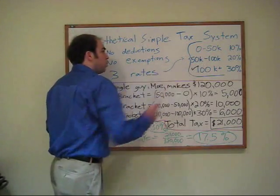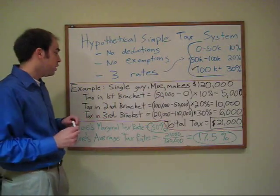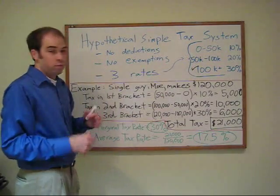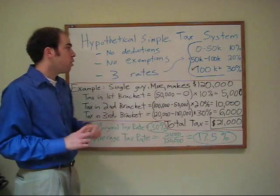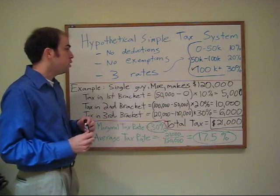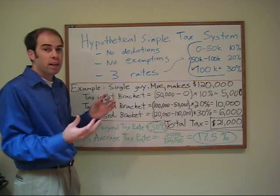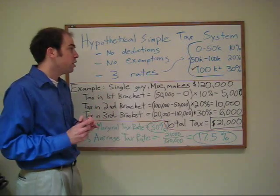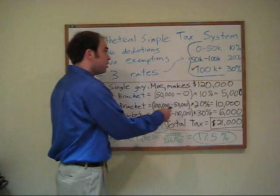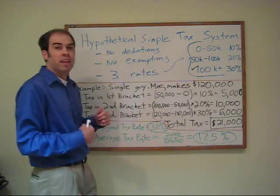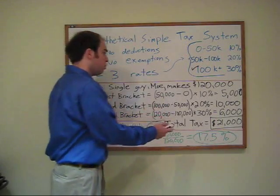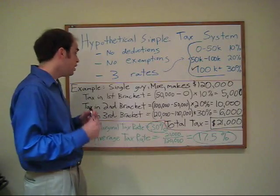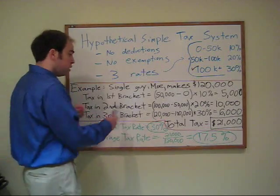The same would apply for the second bracket, the 20% bracket. All his income in that second bracket would be taxed at 20%. Obviously he's beyond that, so he fills the entire bracket. So $50,000 he earns in that bracket times 20% gives a $10,000 tax in that bracket for Moe.